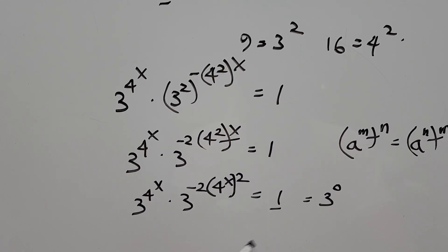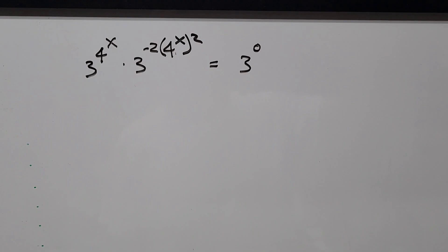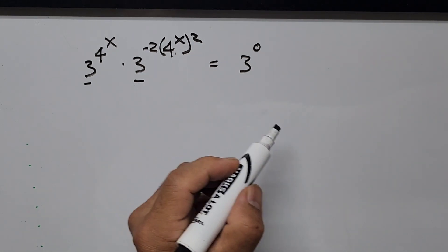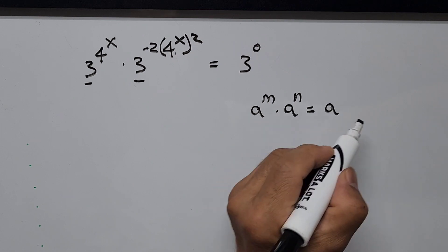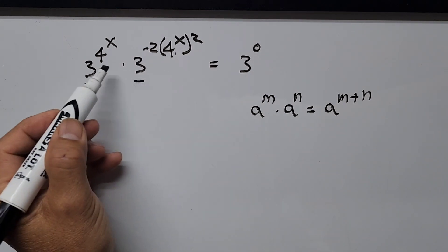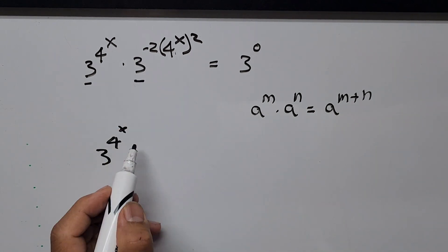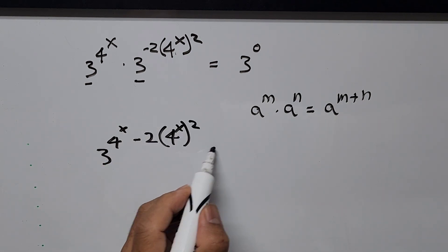Our equation becomes 3 to the power of 4 to the power of x, times 3 to the power of negative 2 times 4 to the power of x, squared, equals 3 to the power of 0. Simplifying the left-hand side — since we have the same base — from the exponent formula, a to the m times a to the n equals a to the m plus n, so we add the exponents. The left-hand side becomes 3 to the power of (4 to the power of x minus 2 times 4 to the power of x squared), equal to 3 to the power of 0.